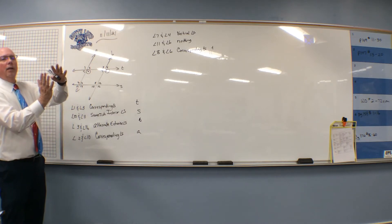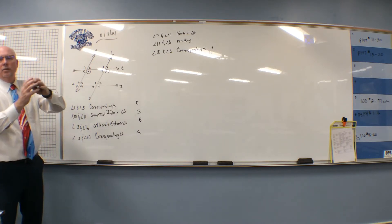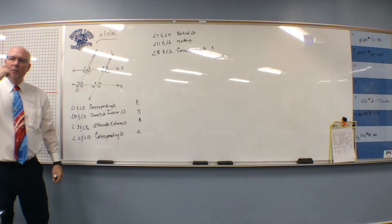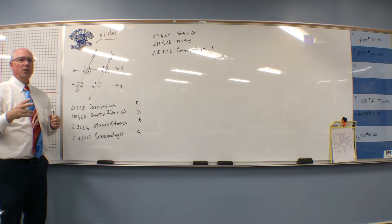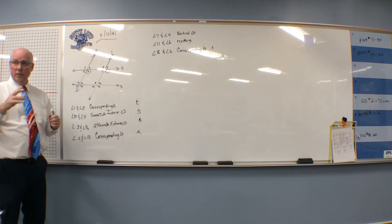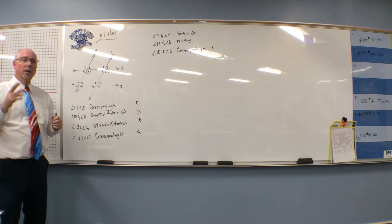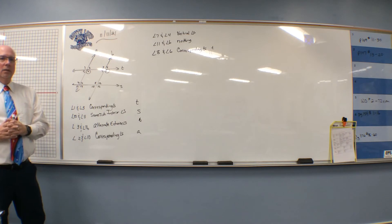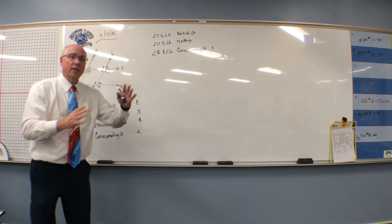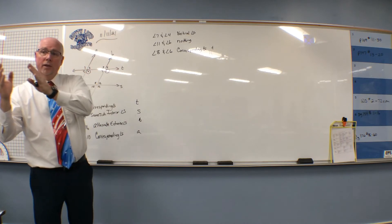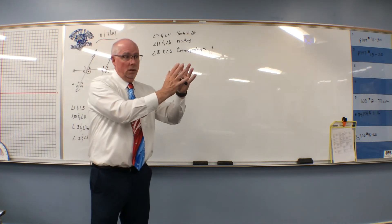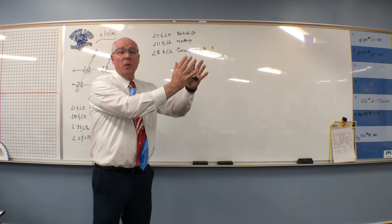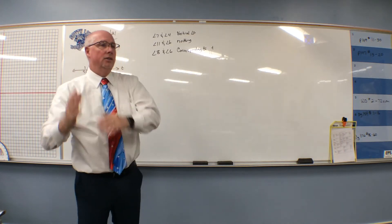Remember the other day we started with parallel lines and said these angles are congruent, these angles are congruent, these angles are congruent, these angles are supplementary? Well, we're going to reverse that today. A converse is the reverse — we flip the hypothesis and the conclusion. We're going to reverse all of those. We'll start out and say, if these angles are congruent, then these two lines are parallel. The other day parallel lines produced congruent angles; now we're going to say congruent angles prove lines are parallel.